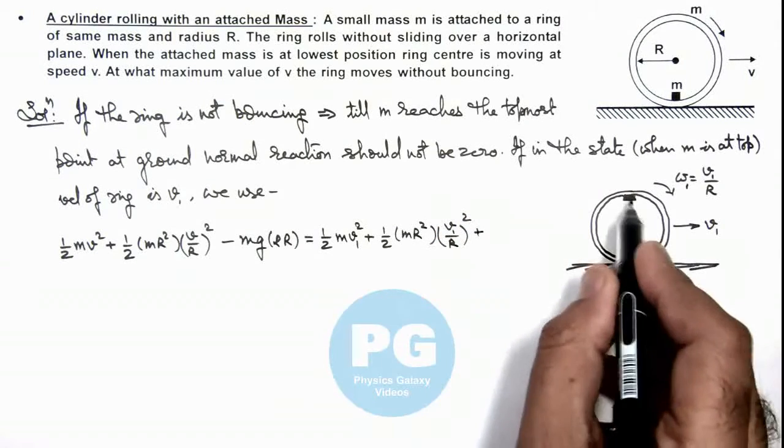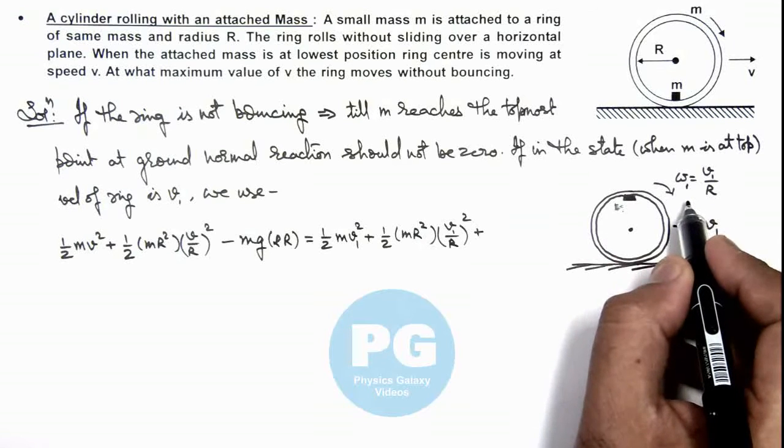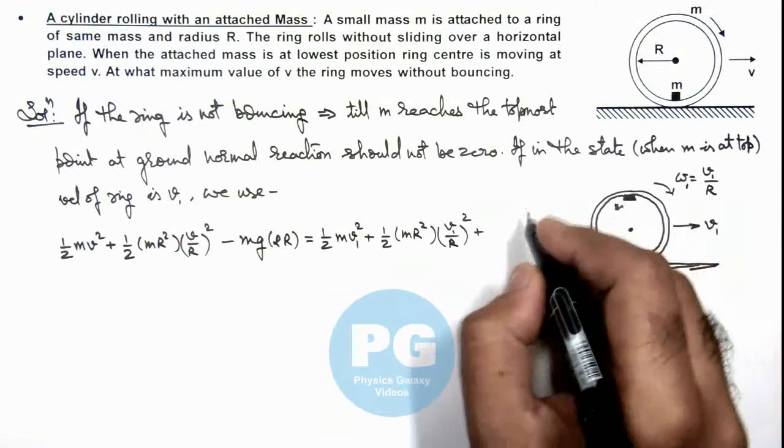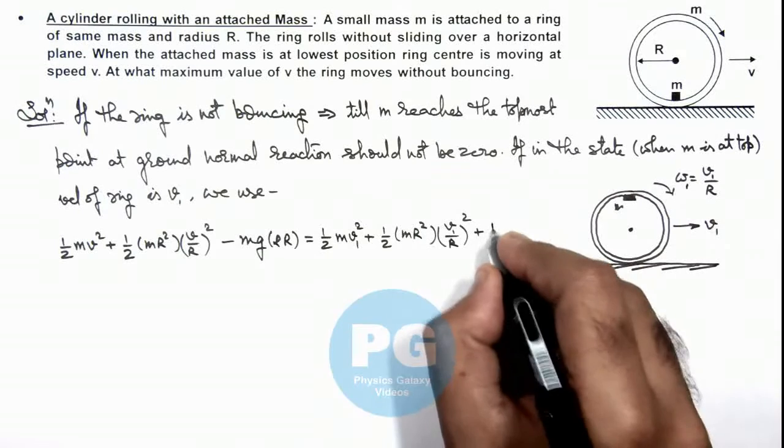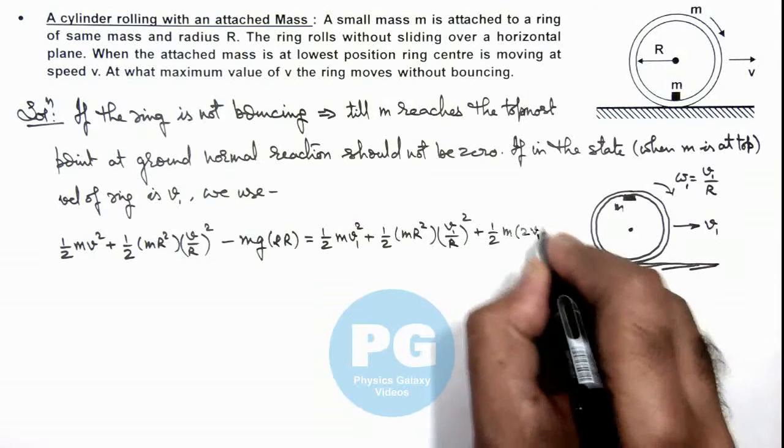Plus the kinetic energy of this mass m which should be moving at twice the speed in pure rolling at the top most point. So it is half m multiplied by 2v1 square.